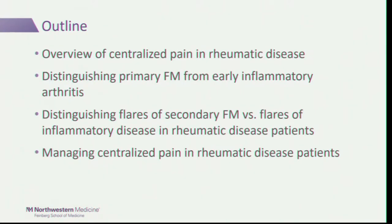Here is an outline of what I want to go over: first, a generalized overview of centralized pain in the context of rheumatic disease, then practically speaking how one might distinguish a centralized pain disorder such as primary fibromyalgia from an early inflammatory arthritis, then how you may distinguish a flare of secondary fibromyalgia versus flares of inflammatory disease—because you treat them differently—and finally how to manage centralized pain in rheumatic disease patients.